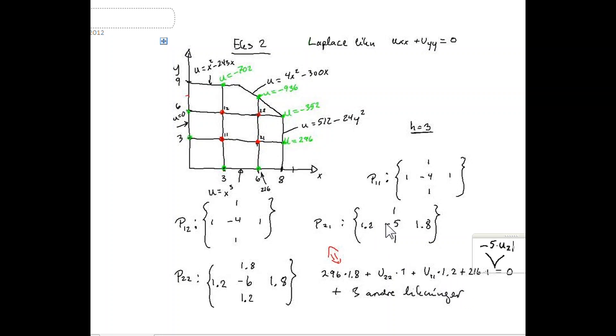And we add the value in this point which is 216, with 1, what is done here. And afterwards we subtract with 5 times the value we are standing in, the value u_2,1. And this should be h squared multiplied with f, and f is 0 for the Laplace equation. So we are considering the Laplace equation here.